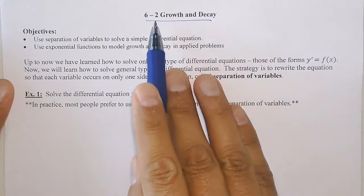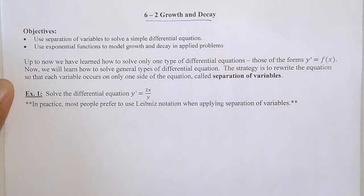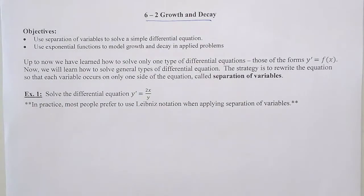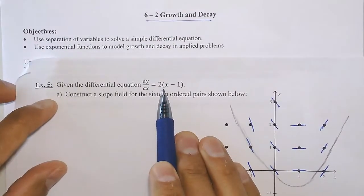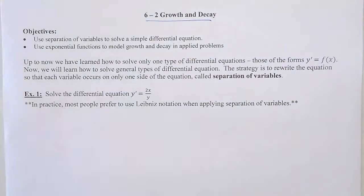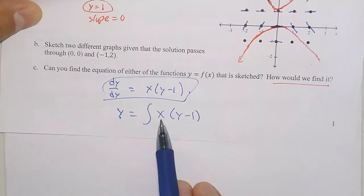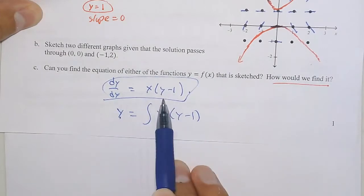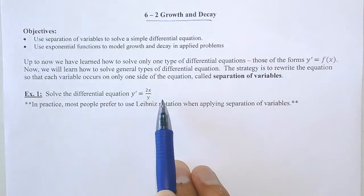Good morning class. This is section 6-2, dealing with growth and decay. We've been talking about differential equations, and the ones we have solved so far have all been in terms of x. I want to show you a quick example of the work from the previous section, where you had a differential equation you could solve because you only had x's — we have not discussed problems where you had x and y's together.